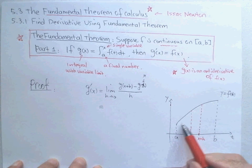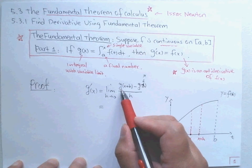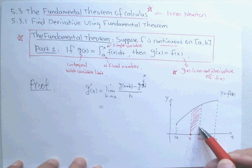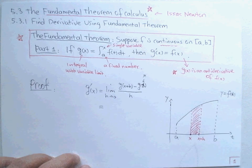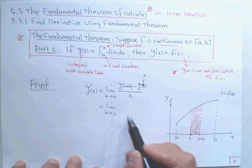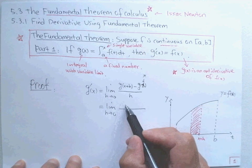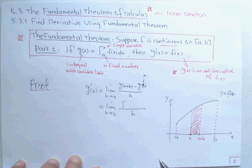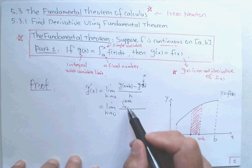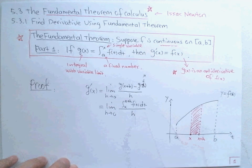The area starting from a and ending at x + h is g(x + h). The difference g(x + h) minus g(x) is the numerator. So the limit as h approaches 0 gives us a definite integral from x to x + h of f(t) dt.